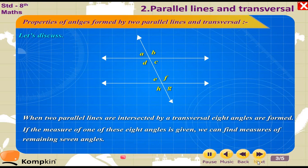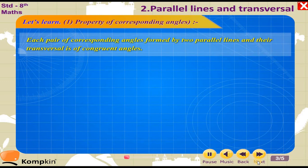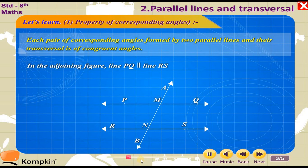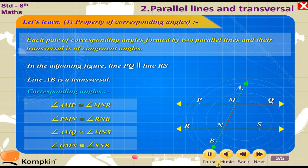When two parallel lines are intersected by a transversal, eight angles are formed. If the measure of one of these eight angles is given, we can find the measures of the remaining seven angles. Property of corresponding angles: Each pair of corresponding angles formed by two parallel lines and their transversal consists of congruent angles. In the adjoining figure, line PQ is parallel to line RS, and line AB is a transversal. Corresponding angles: Angle AMP ≅ Angle MNR, Angle PMN ≅ Angle RNB, Angle ANQ ≅ Angle MNS, Angle QMN ≅ Angle SNB.